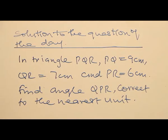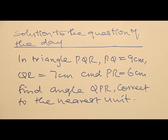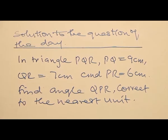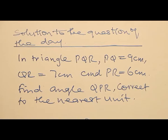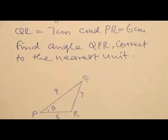Solution to the question of the day: In triangle PQR, PQ equals 9 cm, QR equals 7 cm, and PR equals 6 cm. Find angle QPR correct to the nearest unit.